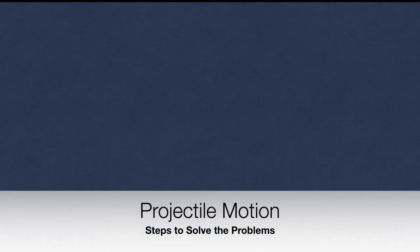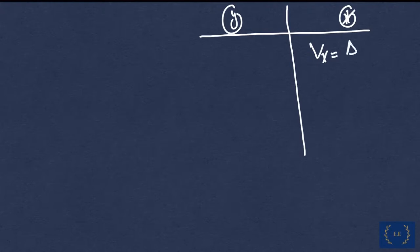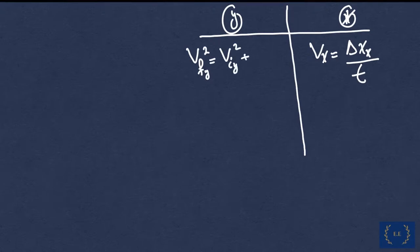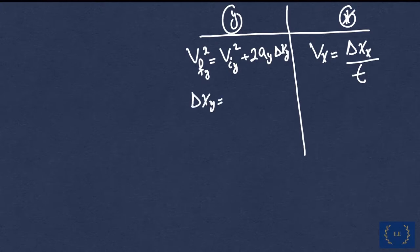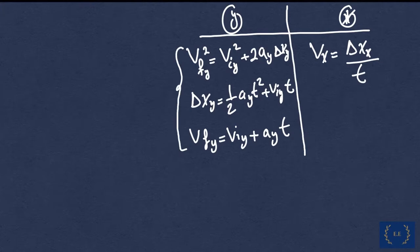We have established the required equations, so let's write them down for convenience. We have two different sets of equations: for the x direction, since it's motion under constant velocity, we have vx equals the change in position in x over time. For the y direction, we have three equations: v_final_y² = v_initial_y² + 2·a_y·Δy; Δy = ½·a_y·t² + v_initial_y·t; and v_final_y = v_initial_y + a_y·t. These three equations cover motion under constant acceleration, and the one equation covers motion under constant velocity.